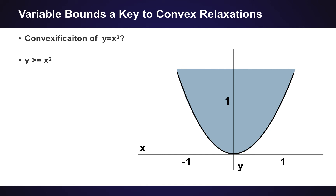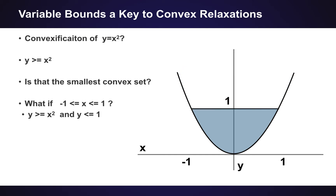This is actually the best you can do if this is all you know about your problem. But it's very rare that you run into these types of constraints in isolation. You can ask yourself, is this the smallest convex set? For this very specific case, yes. But what if we knew that x could only be between minus one and one? Then we could have a constraint that y is greater than x squared and y is less than or equal to one, adding this additional hyperplane which greatly reduces the size of points inside the feasible region.